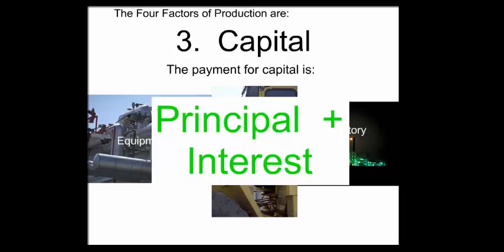The payment for capital is principal and interest. You borrow to make sure you can get the equipment, the factory, the machinery. You've got to pay back your principal amount you owe plus the interest.